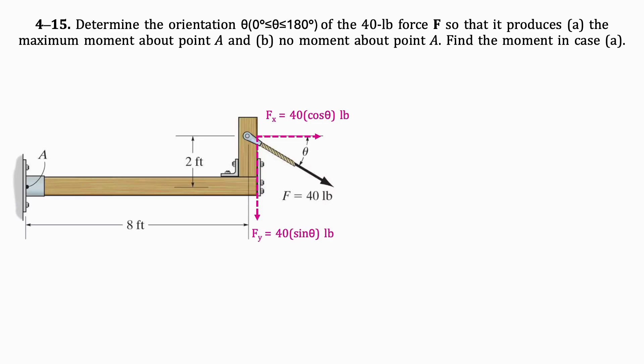Let's find the angle that produces a maximum moment about A. We will set up a moment equation about point A. The moment of the y component about A is the y component of the force times its distance from A, which is 8 feet. The moment of the x component about A is the x component of the force times its distance from A, which is 2 feet.